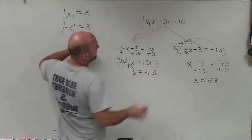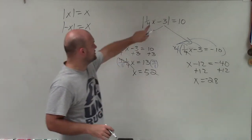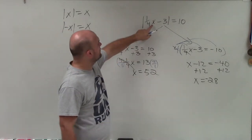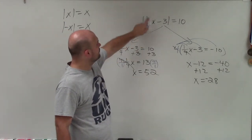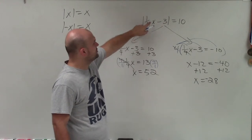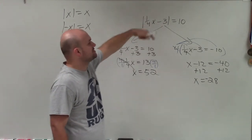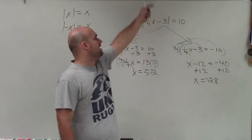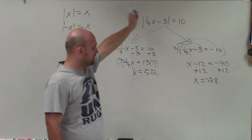Let's check our solutions. When I plug in 52 for x: one-fourth of 52 is 13. 13 minus 3 is 10. The absolute value of 10 is 10. That works.